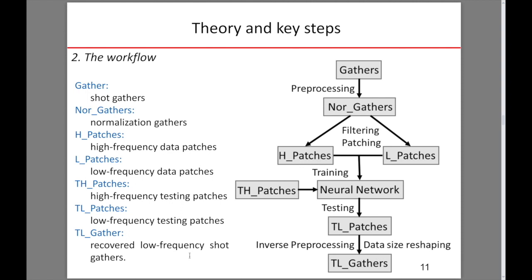This slide shows the workflow of low-frequency seismic data recovery using neural networks. We perform the method on shot gathers. First, we apply data preprocessing to obtain normalized shot gathers. Then filter the data into high and low frequencies. We prepare the input of the network by dividing the shot gathers into a series of high and low-frequency data patches. After training the network, we use it for other low-frequency data predictions. That is, we input the high-frequency data patches into the trained network and its output is predicted low-frequency data patches. Finally, we apply inverse preprocessing and data size reshaping to produce the predicted low-frequency shot gathers.